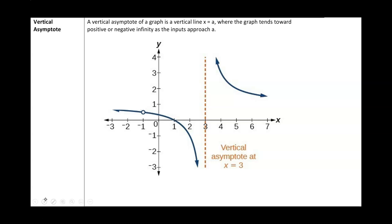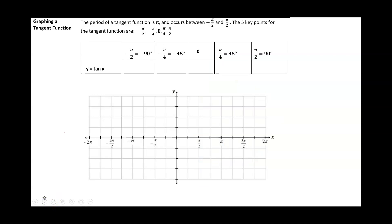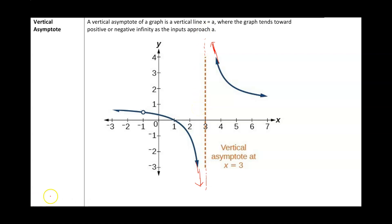Quick recap from college algebra: the vertical asymptote of a graph is a vertical line x equals a, where the graph tends towards positive or negative infinity as the inputs approach a — so there's a gap in the graph. For example, if the vertical asymptote is x equals 3, as the graph gets closer and closer to 3, it goes to either positive or negative infinity. Tangent is going to have a vertical asymptote because anytime you divide by zero, you get an undefined value, and that means we have a vertical asymptote at that x-value.